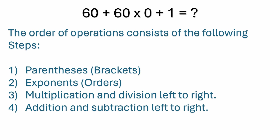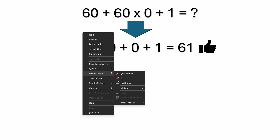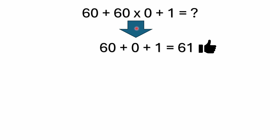So those are the things you want to keep in mind — that relationship between multiplication, division, addition and subtraction. Then the order of operations should make perfect sense. So here we start with the multiplication. In this case it's 60 times zero, which is zero, and then you have 60 plus zero plus one equals 61. So the correct answer would be 61.